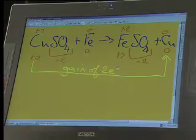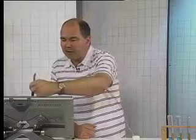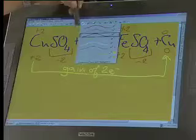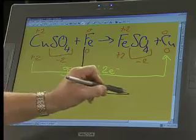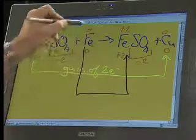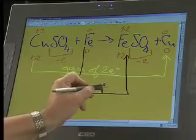What about the iron? Notice the opposite has happened to it. The iron started off as zero and has ended up as plus two. That means that iron has lost two electrons. So we have a loss of two electrons.